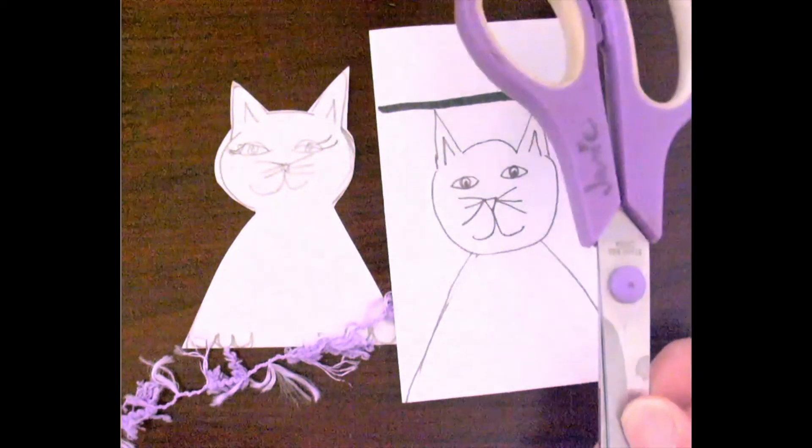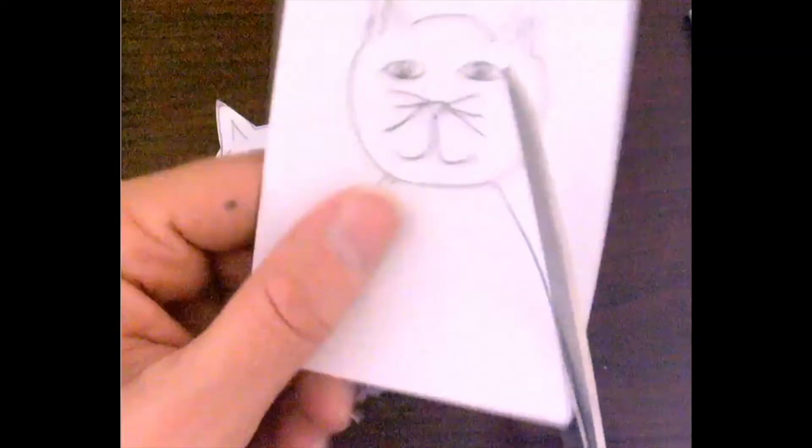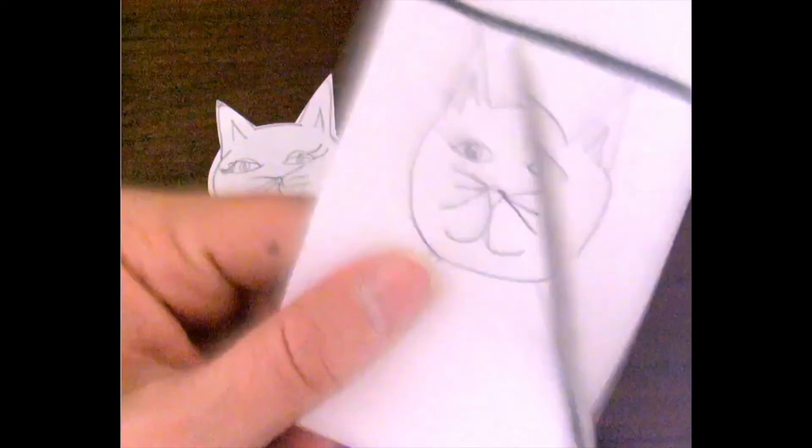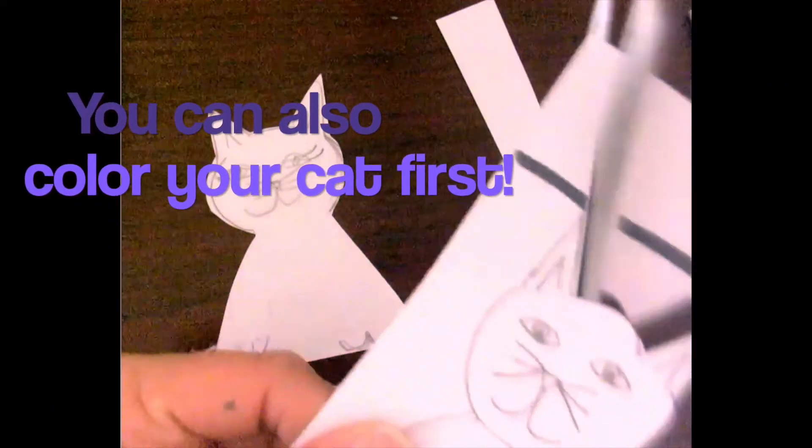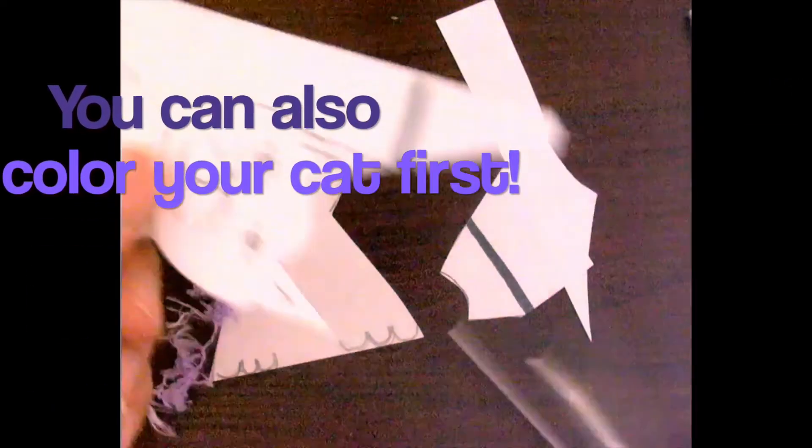And now you're going to get your scissors and cut it out. Okay, I suggest holding it in one hand, cutting it very carefully. You might have to turn your paper as you cut. If you want, you could have colored this first or gone over it again in marker.